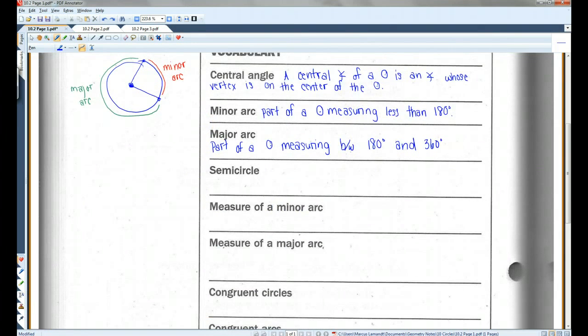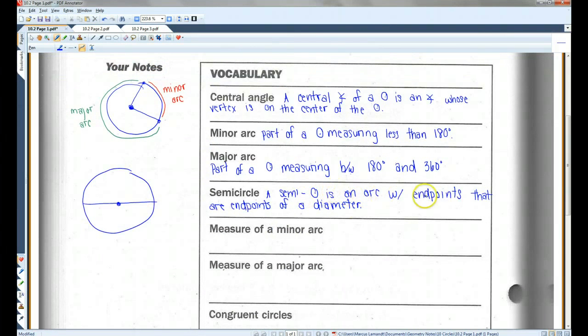A semicircle is an arc with endpoints that are endpoints of a diameter. So, like what I've drawn here, this is a diameter. This would be a semicircle.